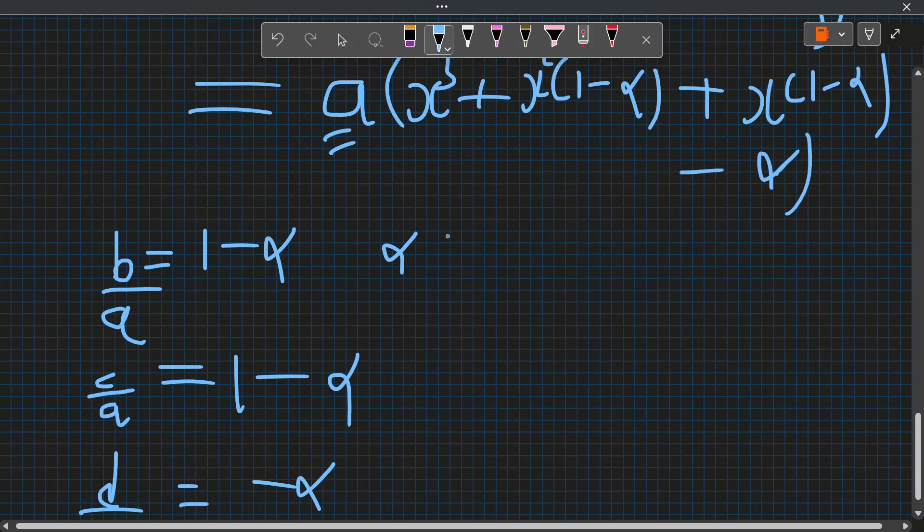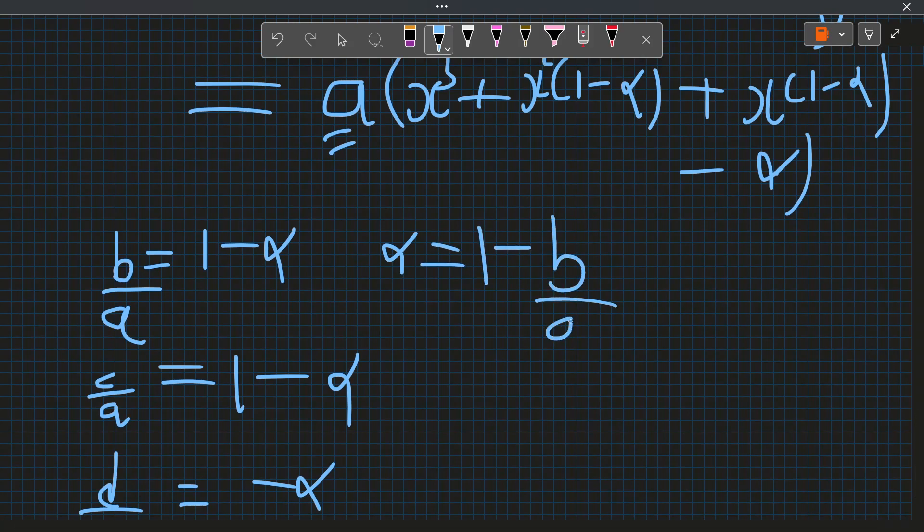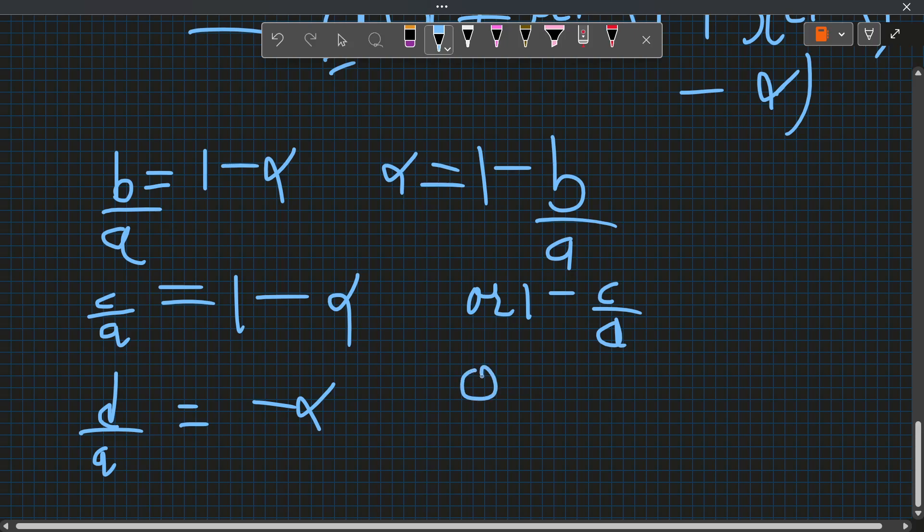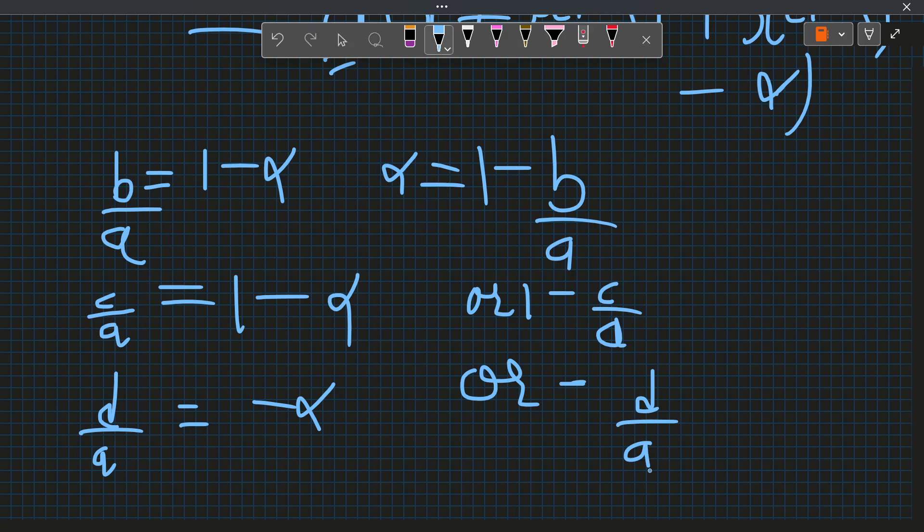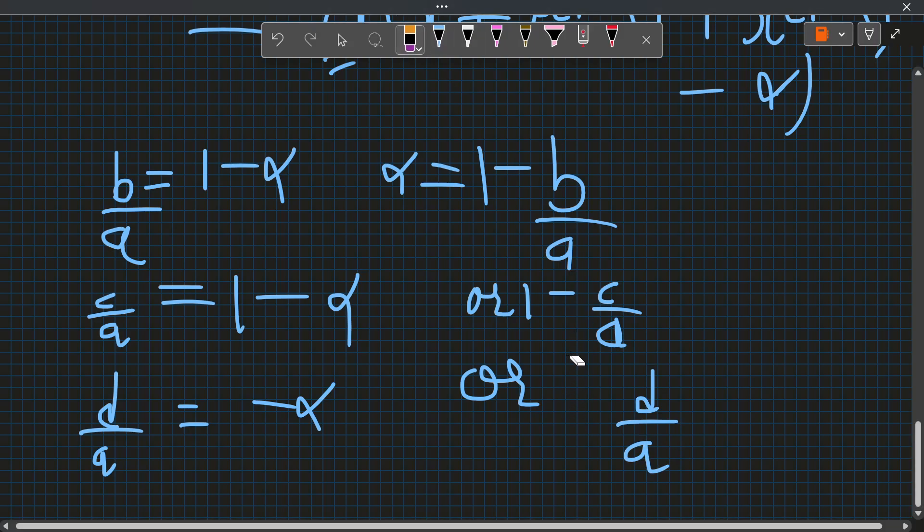Now α can be 1 - b/a, or 1 - c/a, or -d/a. So any one of them could be α.